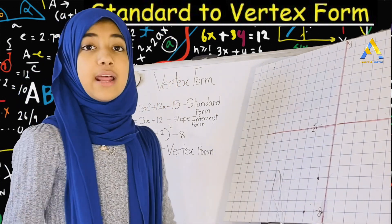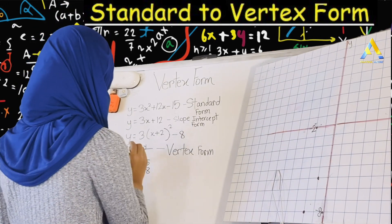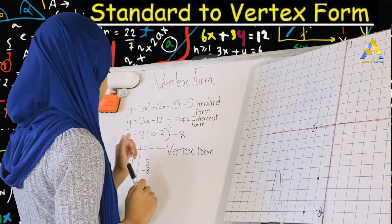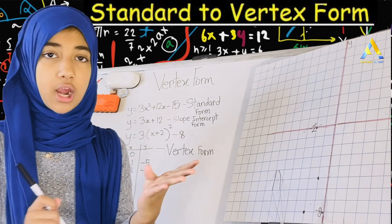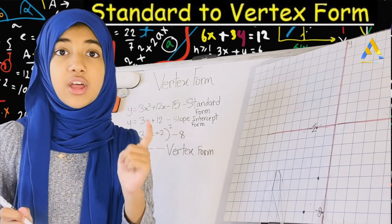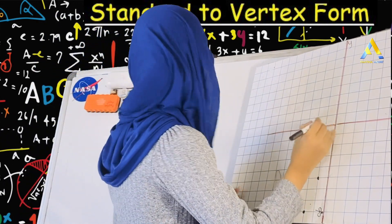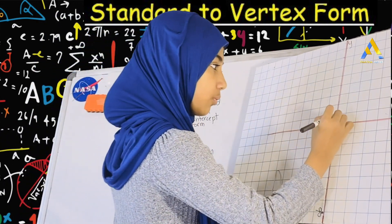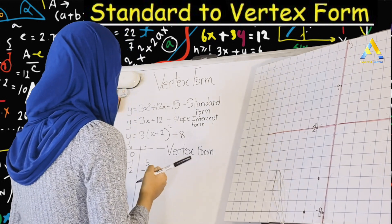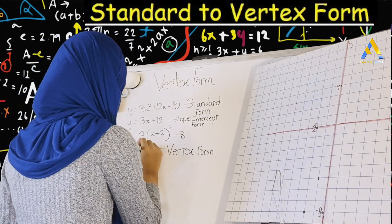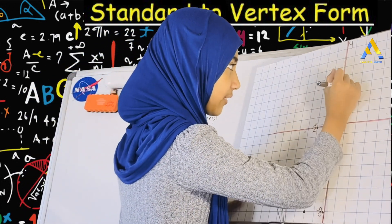Now let's do another point. When x is 0: 0 plus 2 is 2, 2 squared is 4, 4 times 3 is 12, and 12 minus 8 is 4. So when x is 0, our y will be 4. That's all the way up there at 4. Our x value is 0, so the point will be right here at (0, 4).